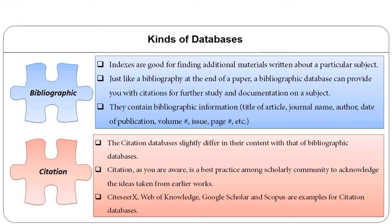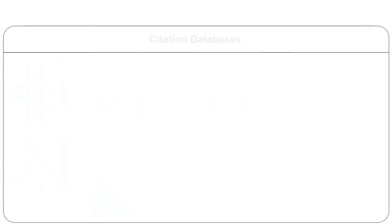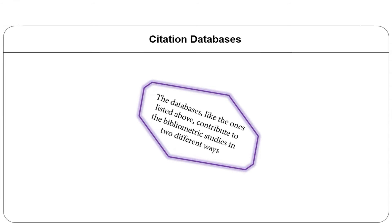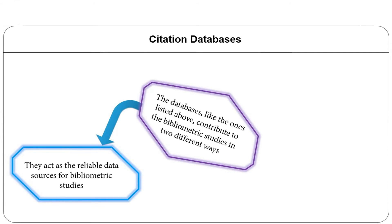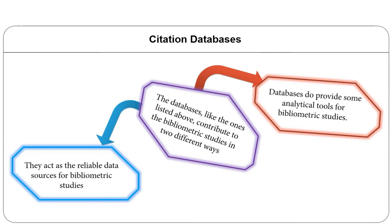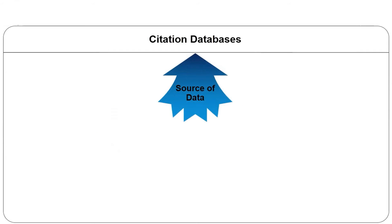Citations are presumed to be related to the topic of the current paper by their contents, irrespective of the reasons for citing. CiteSeerX, Web of Knowledge, Google Scholar and Scopus are examples of citation databases. These databases contribute to bibliometric studies in two ways: they act as reliable data sources and they provide analytical tools for bibliometric studies.